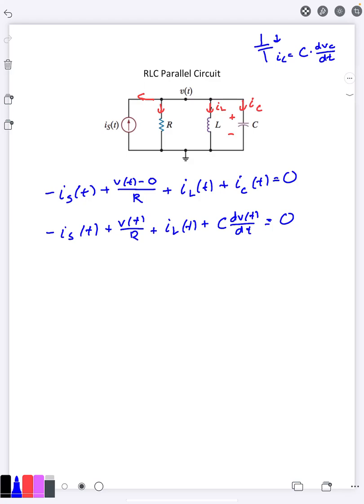The last thing we need is to now replace our iL of t also with respect to the v of t. So we need to think about what relationship do we have on the voltage and current through an inductor. So we'll go ahead and remind you of that.